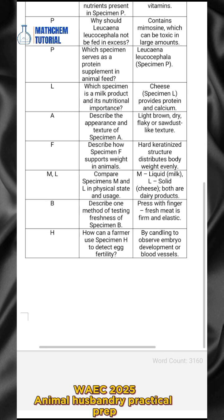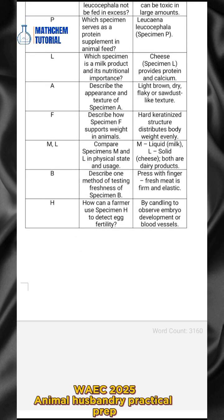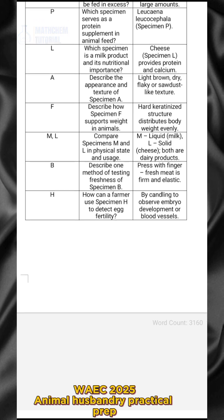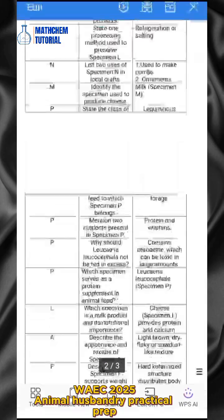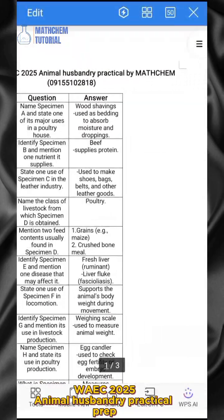Both specimen M and L are dairy products. For specimen B, describe one method of testing freshness. The answer is: press with a finger — fresh meat is firm and elastic. For specimen H, how can a farmer use it to detect egg viability? The answer is by candling to observe embryo development or blood vessels.